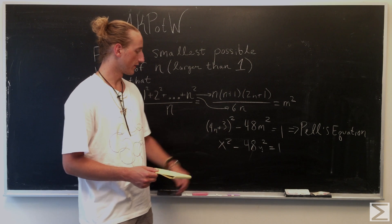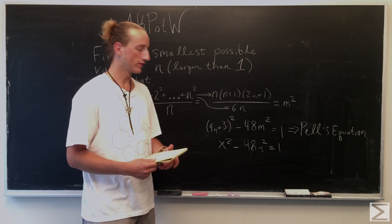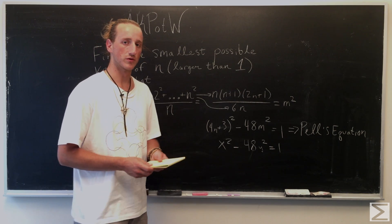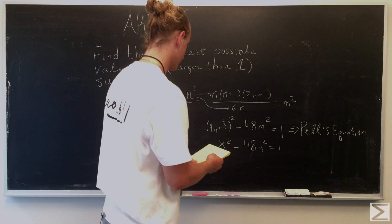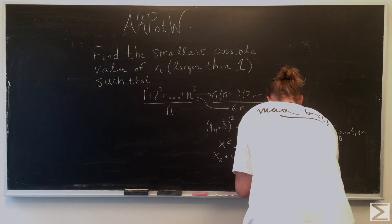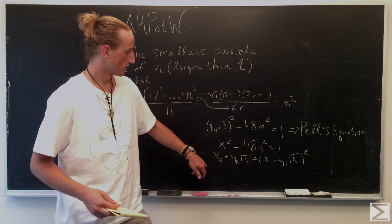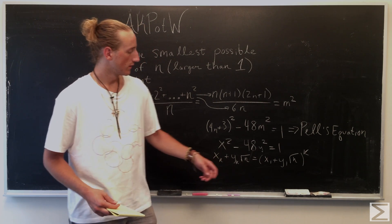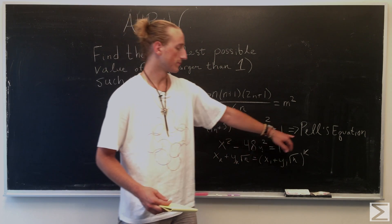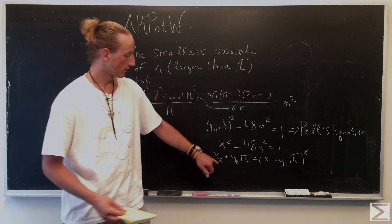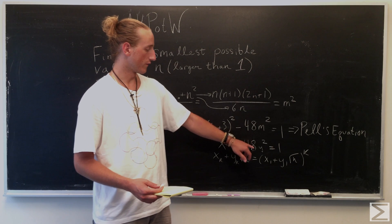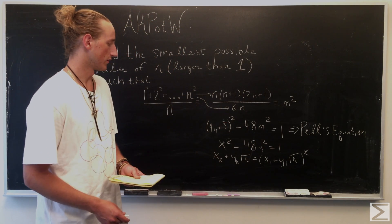Pell's Equation tells us we can simplify this to find the fundamental solution — the most basic, smallest solution — which we can then use to produce all other solutions. We can get any case from our basic solution x₁ and y₁, the fundamental solution, multiplied to the k power, and that will give us a new form. So we're looking for the fundamental solution of x minus the square root of 48 times y, because 48 is our n.